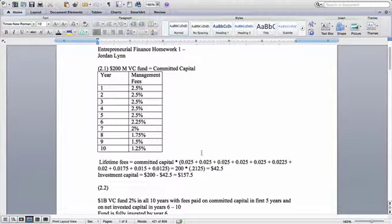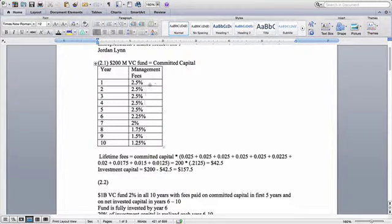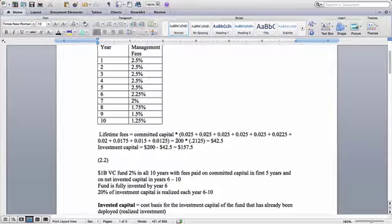The $200 million in the venture capital fund, which is what we call committed capital. All this here in the table is information given to us through the problem. And lifetime fees equals committed capital times these management fees. We get 200 times 0.2125, we equal 42.5, which is the total lifetime fees.